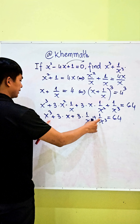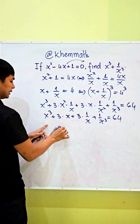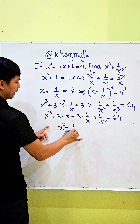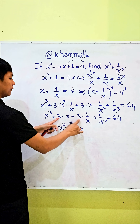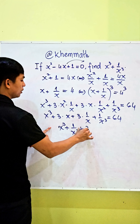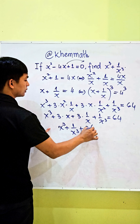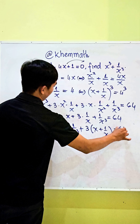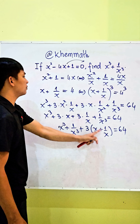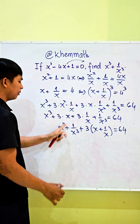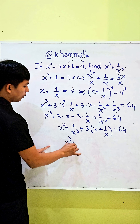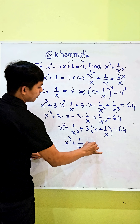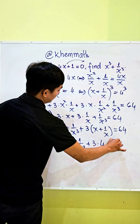Writing it neatly, we get x cubed plus 1 divided by x cubed, plus here we factor out 3, giving us 3 times (x plus 1 divided by x), equals 64. And here we substitute x plus 1 divided by x equals 4, so we get x cubed plus 1 divided by x cubed plus 3 times 4 equals 64.